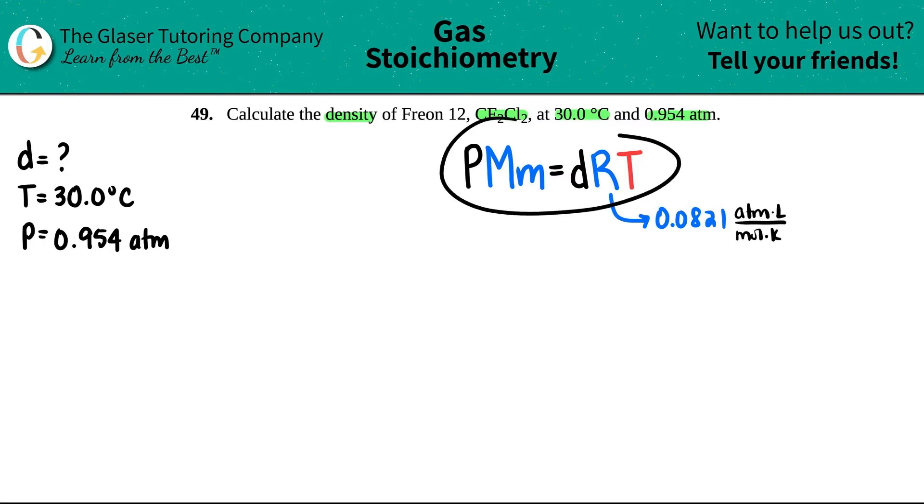So when we use this formula, the P, the pressure, still has to be in atm. So we're good for that. They gave it to us in atm, so check. MM is a new thing. MM is one variable. This is molar mass, and this comes from the actual compound. Oh, that's why they gave me the compound.